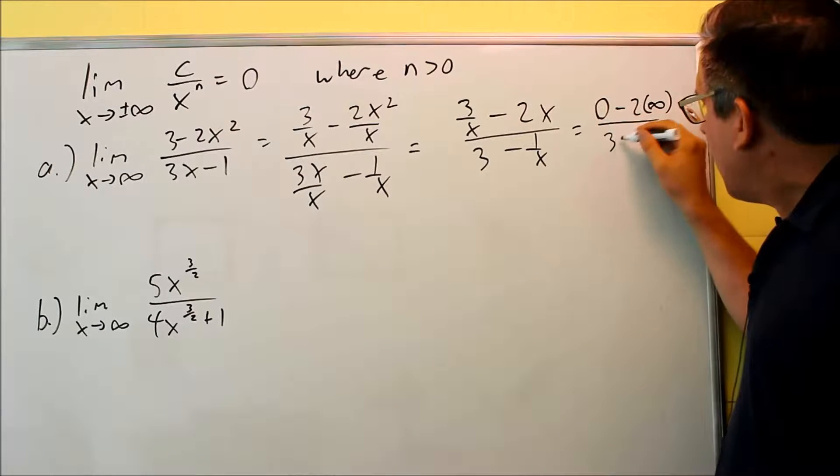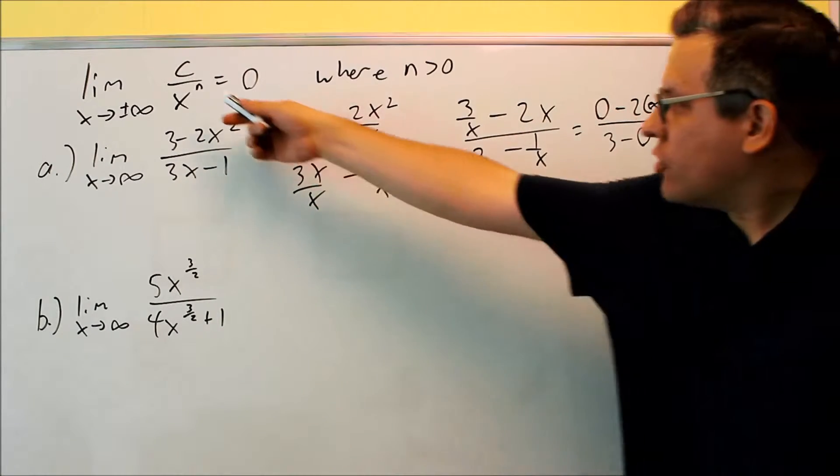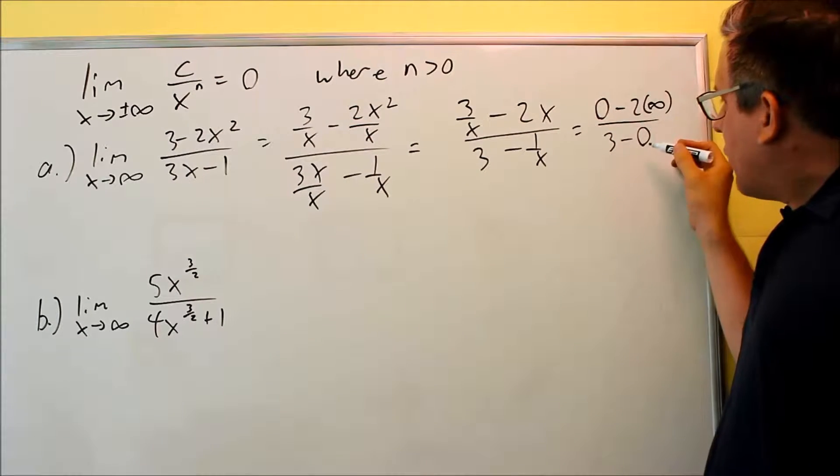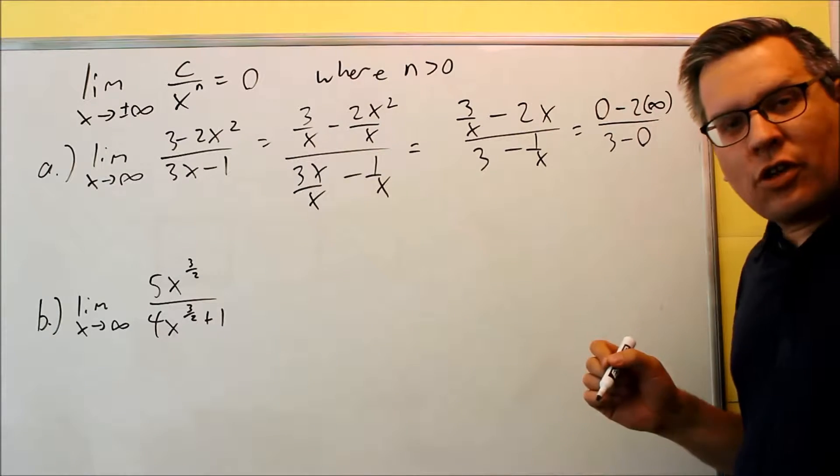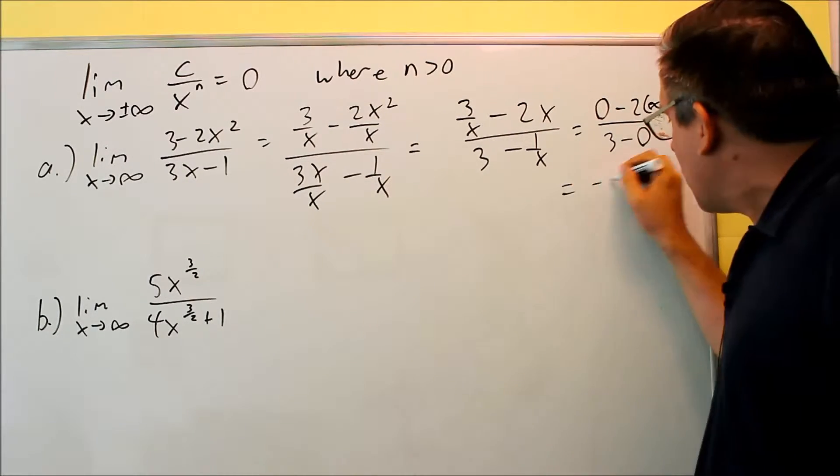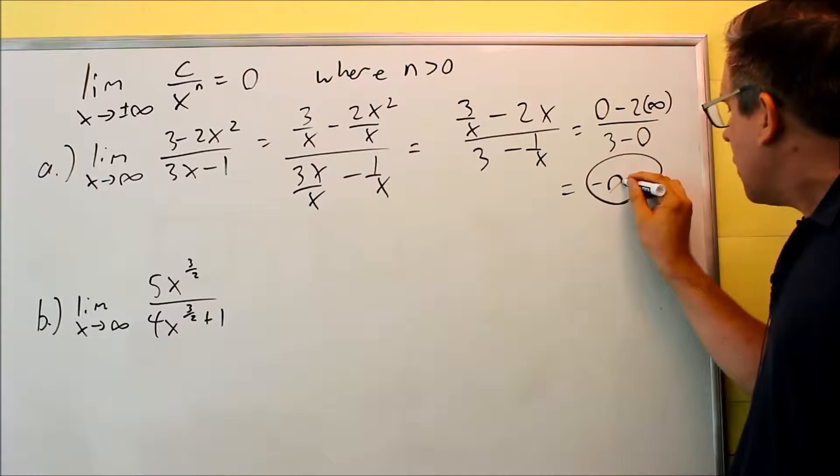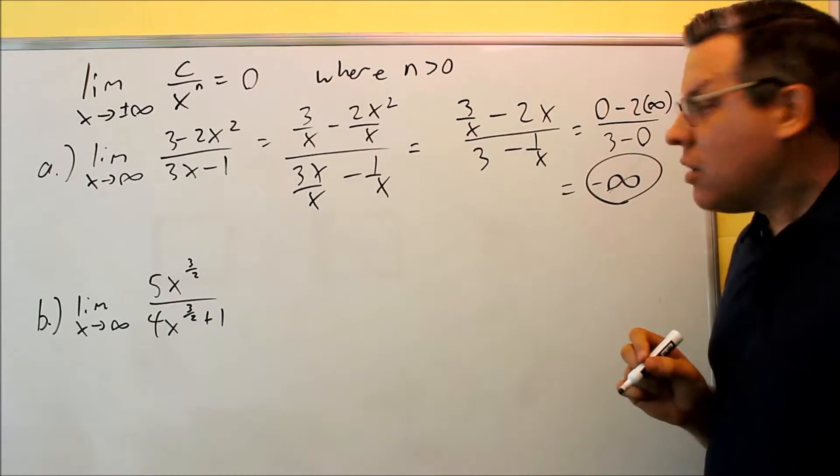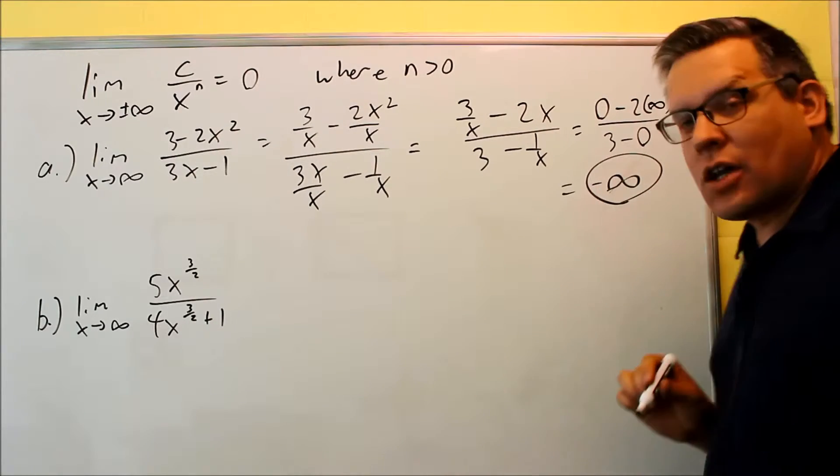On the bottom, I have 3 minus 0. Again, that's going to go to zero. We're using that property. Now, what's left here is you get 0 minus 2 times infinity. Well, negative 2 times infinity is going to give you negative infinity. So the answer for this problem is going to be negative infinity. We can kind of think of that as an infinite number times a negative that will change the sign and make it negative infinity.